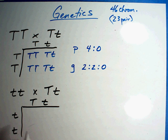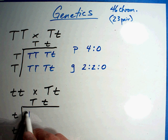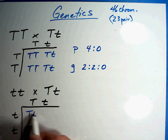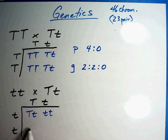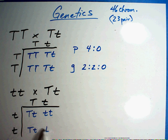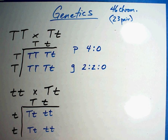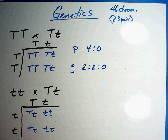Let's try the other Punnett square. The results are: big T little t, little t little t, big T little t, little t little t. Check your answer and see if this is what you get for your Punnett square.